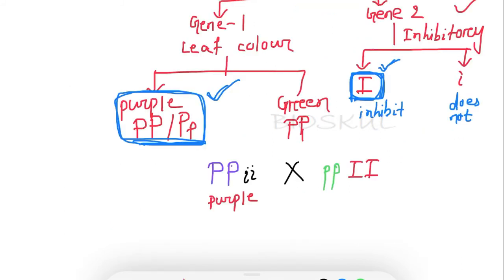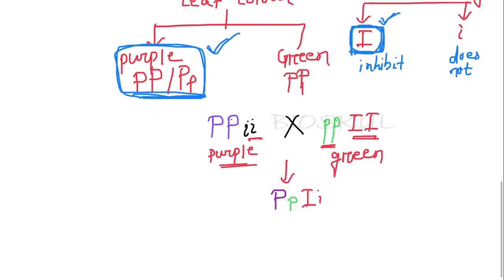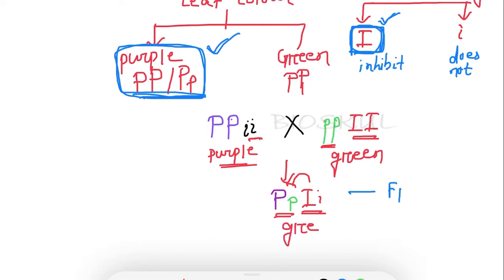In the cross: where the recessive allele of gene two is present, it cannot mask the expression of the dominant allele of gene one, resulting in purple color. Where the dominant allele of gene two is present, it cannot inhibit the recessive allele of gene one, so green color is expressed. In the F1 generation we get capital P, small p, capital I, small i. Since gene two is in dominant form here, it inhibits gene one, resulting in green color.